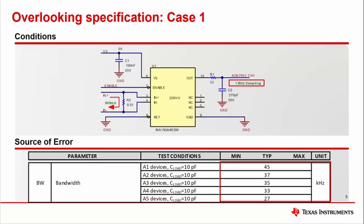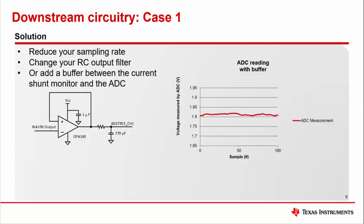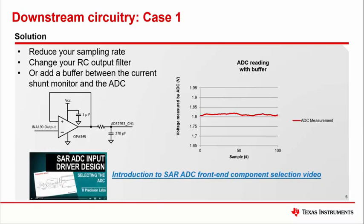So naturally you might ask how do I fix this issue? You can either reduce your sampling rate, change your RC output filter, or put a buffer with a high bandwidth between the current monitor and ADC. In our case we chose a buffer with an OPA365 and were able to get the measurement shown here. We recommend watching the following video from the ADC team to better understand this issue and learn about the tools they provide for helping you select the best option for interfacing with an ADC. We also recommend reading the current sense amplifier considerations for driving SAR ADCs application report.